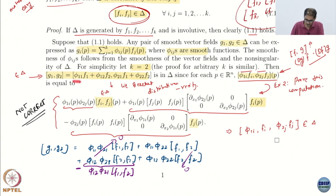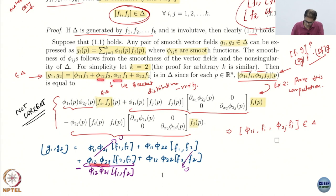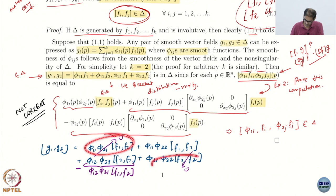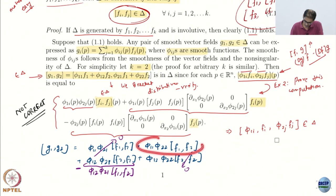So from G1, G2 I will get: phi_11 phi_21 [f1, f1] as the first term, then phi_11 phi_22 [f1, f2], then phi_12 phi_21 [f2, f1], and phi_12 phi_22 [f2, f2]. Now it should be obvious that the Lie bracket of a vector field with itself is zero. So these two self-bracket terms are gone.